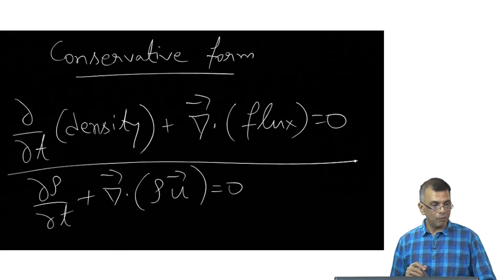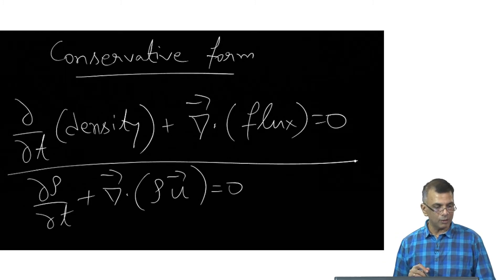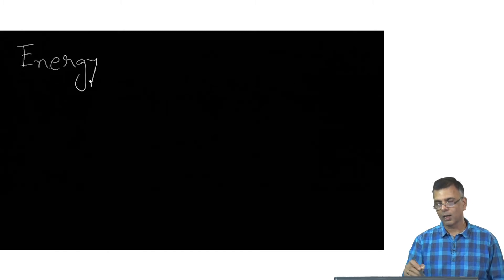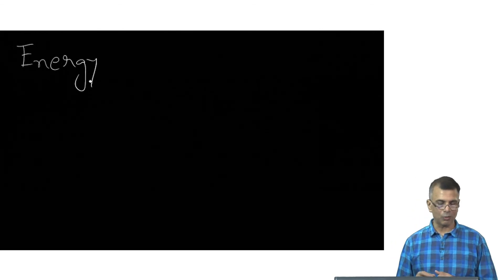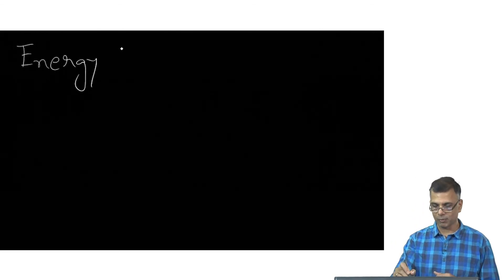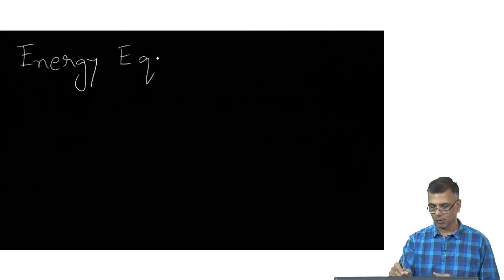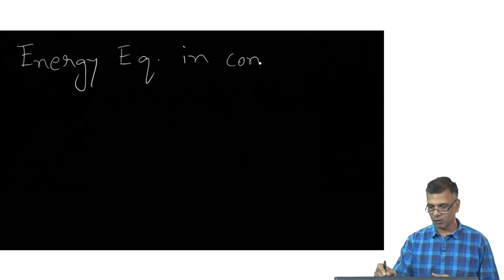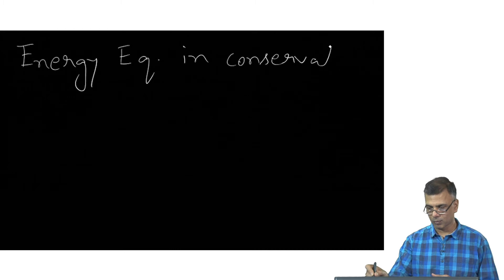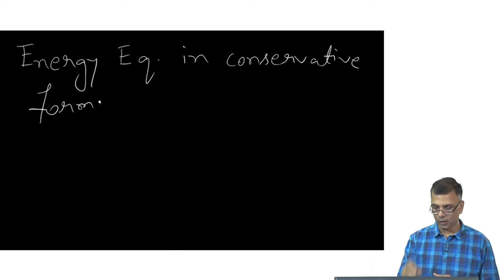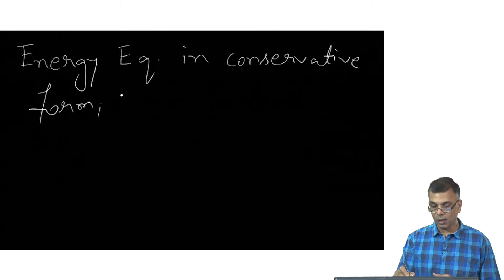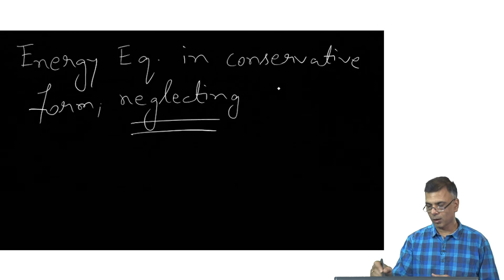This would be zero and you would be able to do that, you would be able to write down the right hand side as zero as long as you were able to pull this term in here and this could be written as the gradient of a potential, in which case you could write it down exactly in the same form. In a very similar fashion, let's try to write down the energy equation in conservative form, but neglecting viscosity.